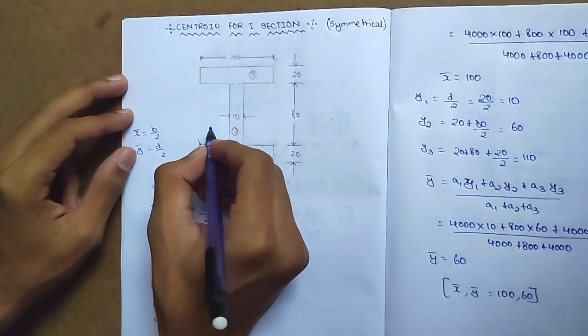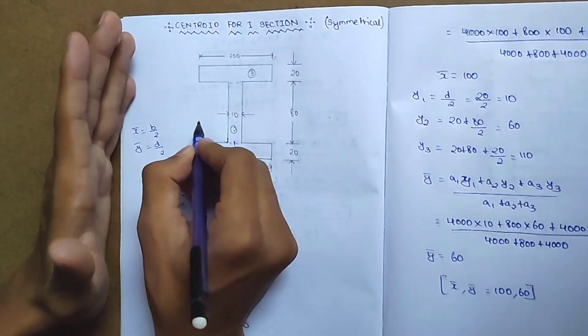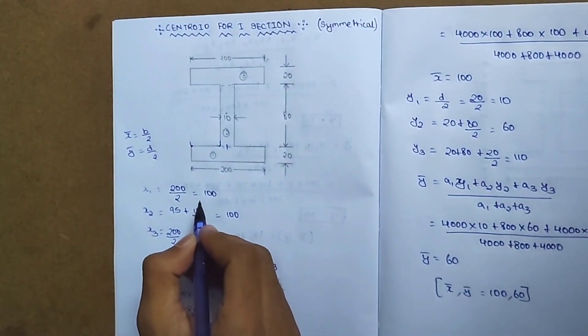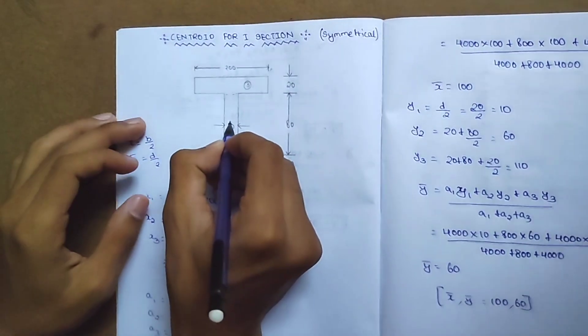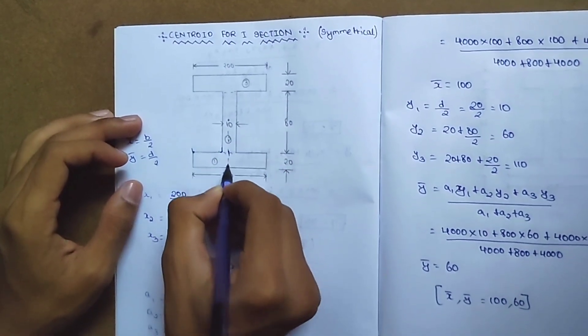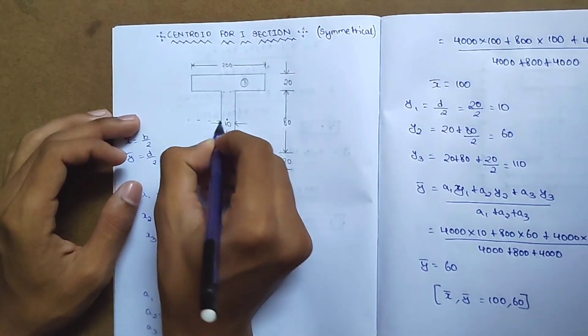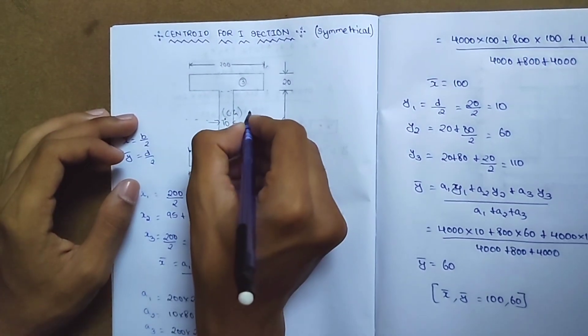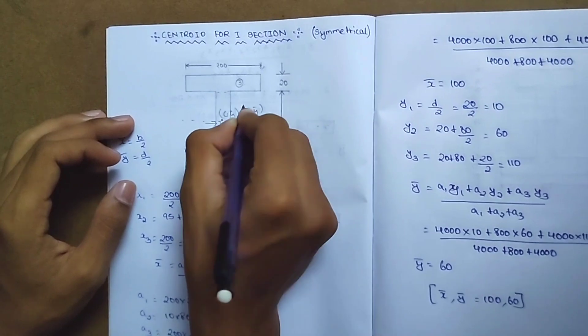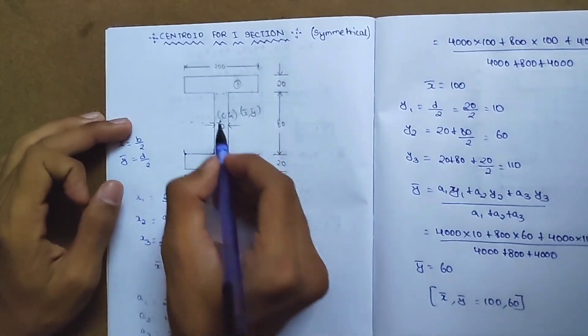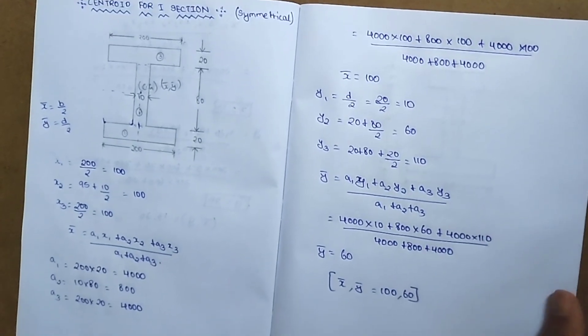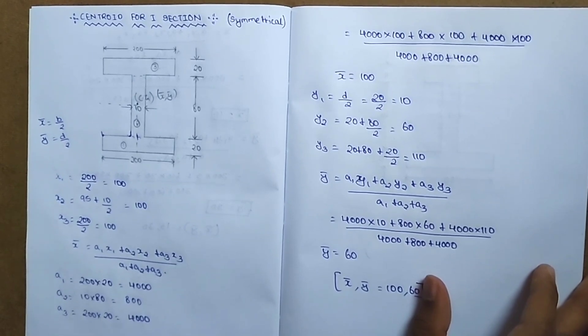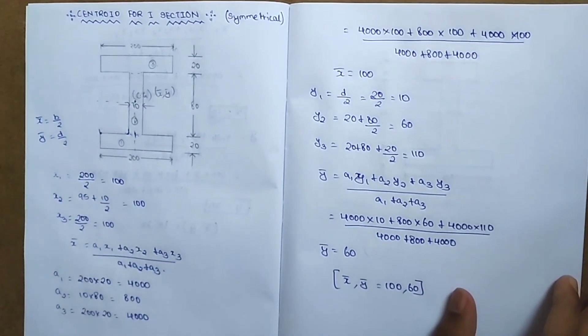We plot the centroid at this point, which is the center of gravity (CG). This is how we find the centroid for an I-section. For symmetrical sections, it's simpler. For unsymmetrical sections, the process is more complicated, which we'll cover in the next video.